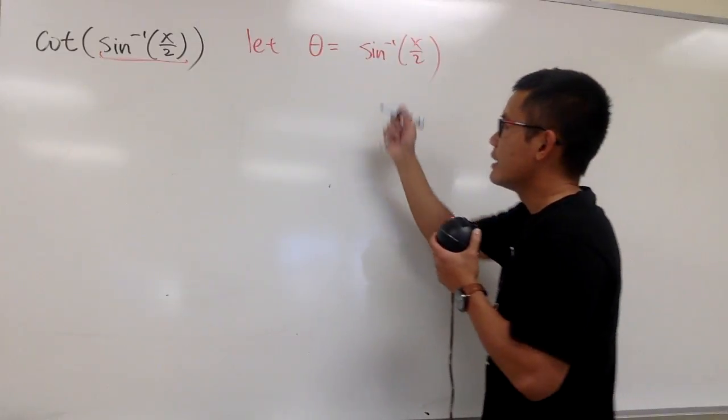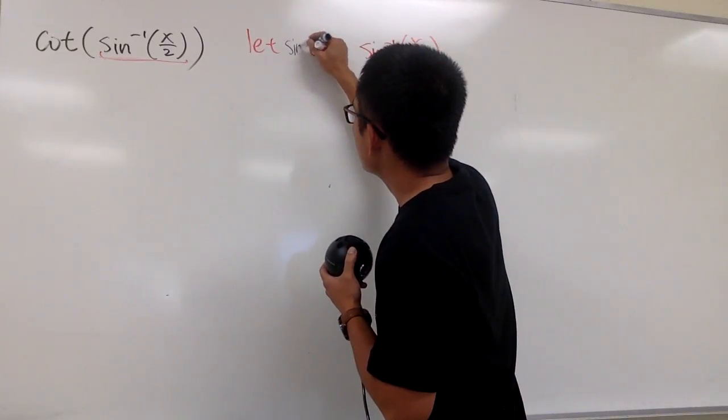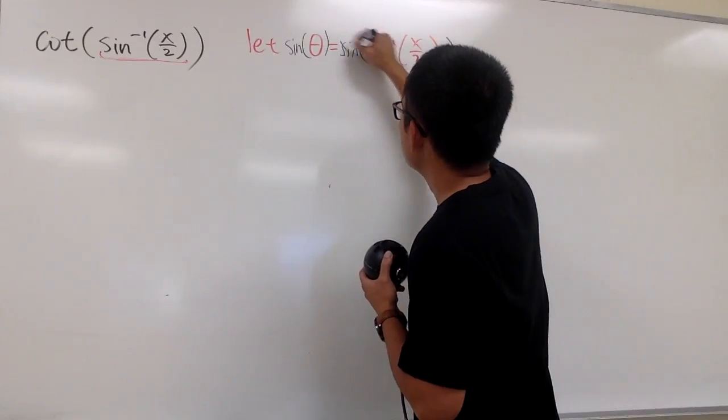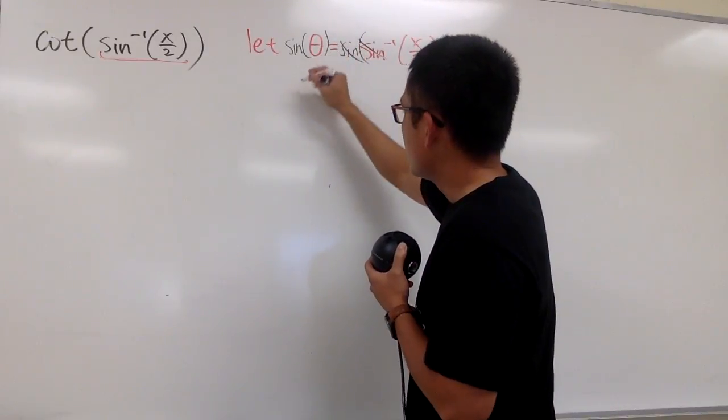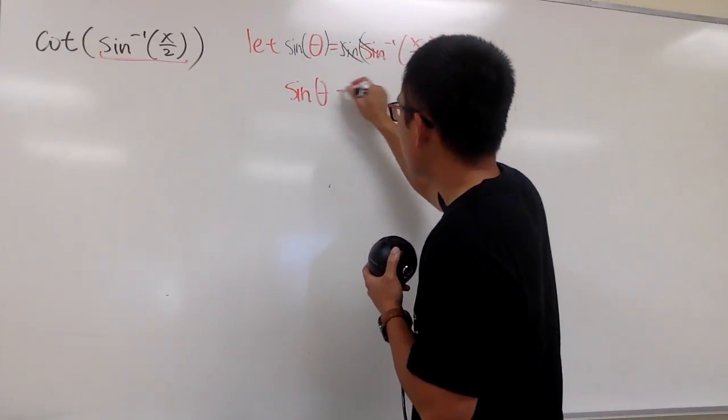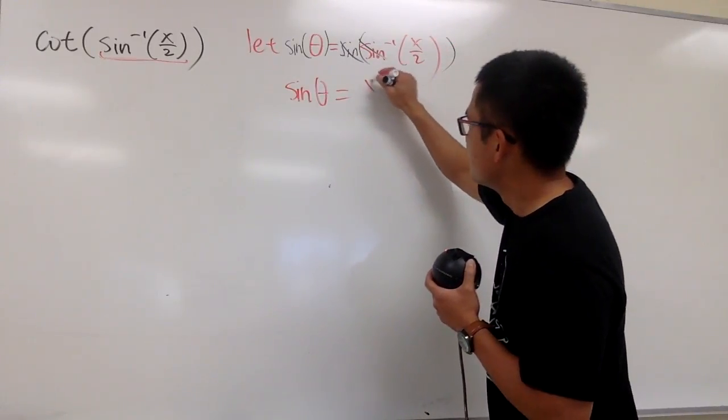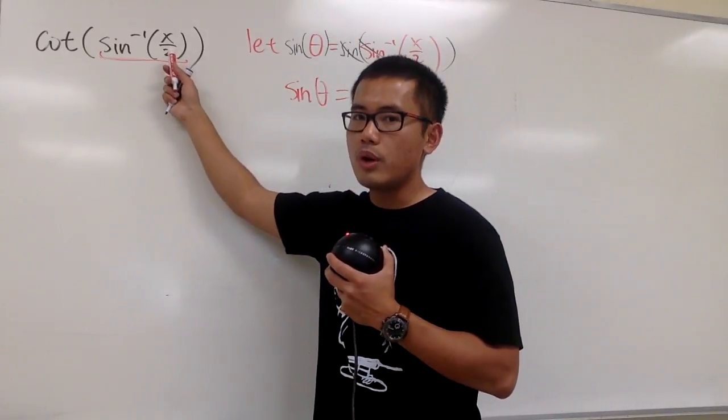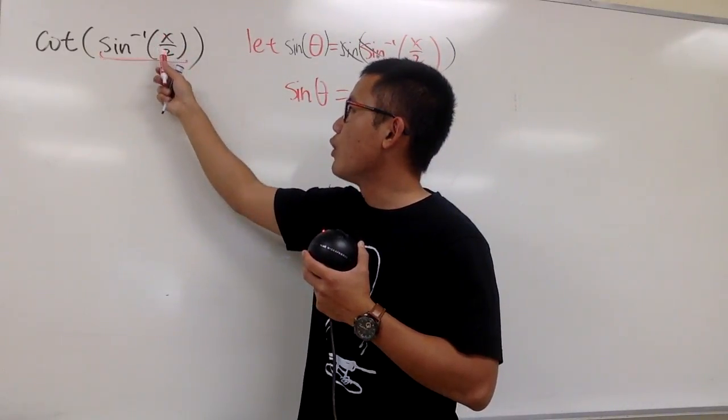And once I have this, I can take the original sine function on both sides, so that this and that will be canceled. And we can look at this as sine θ equals to just x over 2. And you could have done it right here as well if you are okay with x over 2.